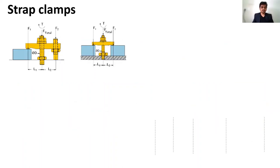Here you can see the basic strap clamp. This is the strap which applies the force on the part. We have a stud here and a resting part. When we tighten the stud, it applies the clamping force — what we call the clamping or restraining force.